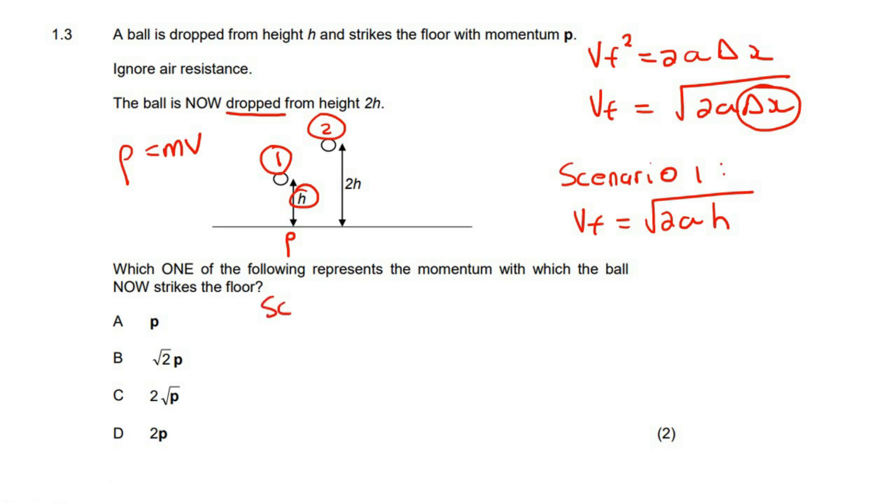For scenario two, the final velocity would be, remember the formula goes like this, like we saw over here, and so the final velocity would be square root of 2a. Now the displacement is 2h, and so if you had to go work that out, you end up with 4ah.